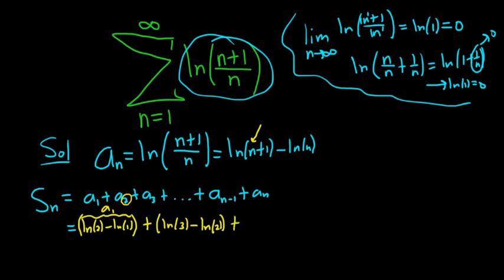Plus a sub 3. Now we're plugging in 3. So it would be 3 plus 1 is 4 minus ln 3. Beautiful stuff. Plus, dot, dot, dot, plus.